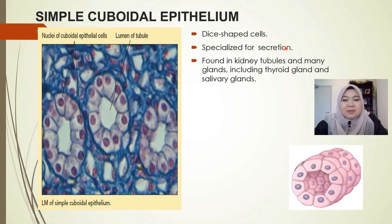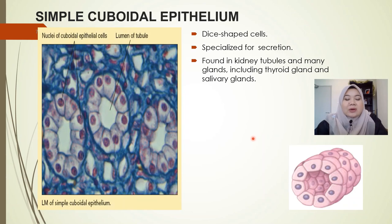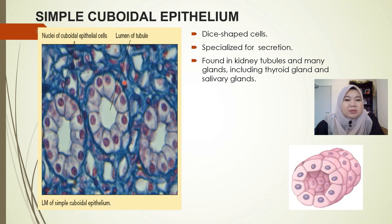Simple cuboidal cells are dice-shaped cells specialized for secretion. They are usually found in the kidney tubules and also in glands, including thyroid glands and salivary glands. You can see the square or dice-shaped cells with the lumen in the middle.